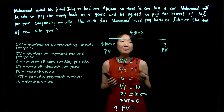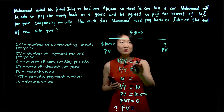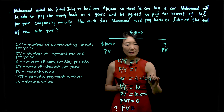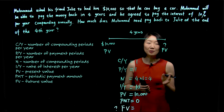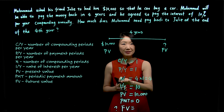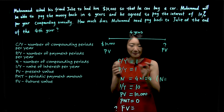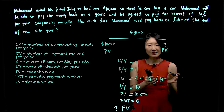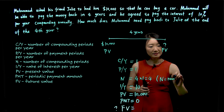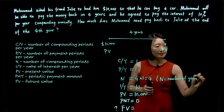N is the number of compounding periods. We're talking about a four-year period and compounding is once a year, so N is four times one, which equals four. Later on, when we look at annuity examples, you will see N represent the number of periodic payments. In either case — compounding interest or annuity calculations — you can always use the formula: N equals number of years times PY.